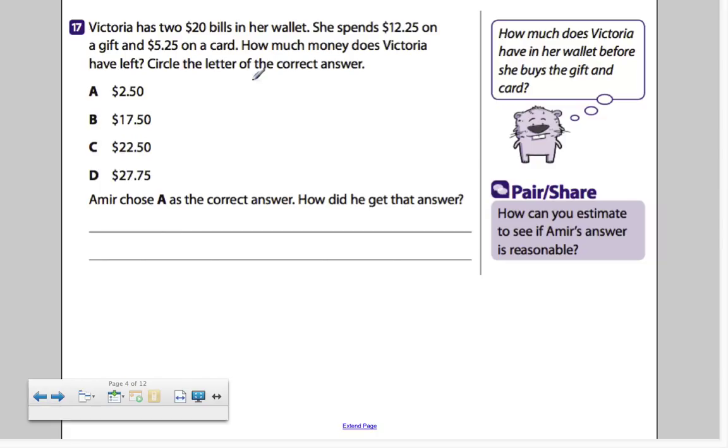Victoria has 2 $20 bills in her wallet. She spends $12.25 on a gift and $5.25 on a card. How much does Victoria have left? So first let's see that she has $20. And how many cents? Well, 0 cents. Let's add up what she spends. She spent both of these prices. So let's add that up.